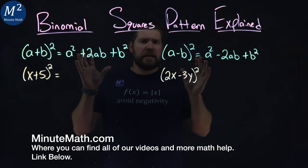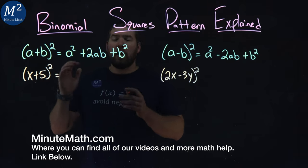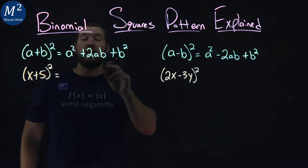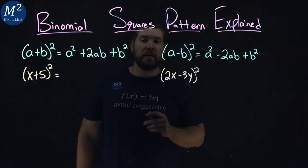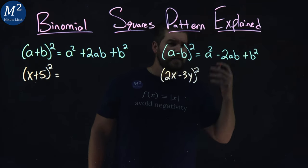We have two patterns here, the Binomial Squares Patterns. a plus b all squared comes out to be a squared plus 2ab plus b squared. The second one is a minus b all squared is a squared minus 2ab plus b squared.